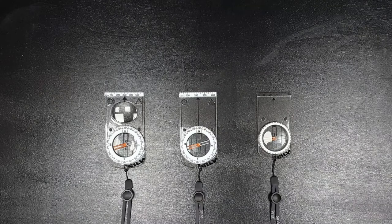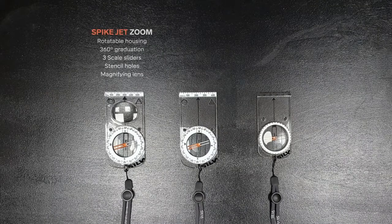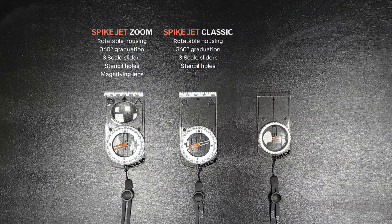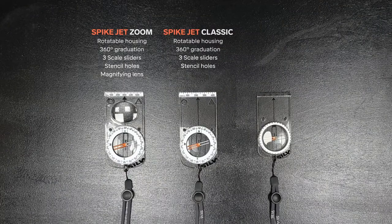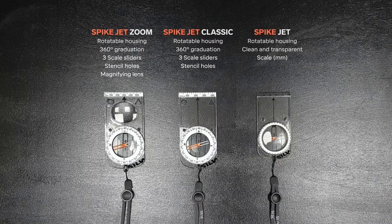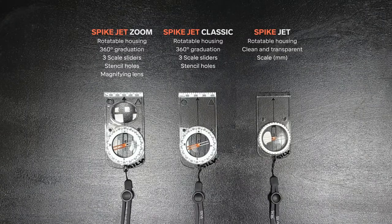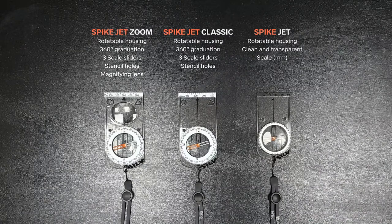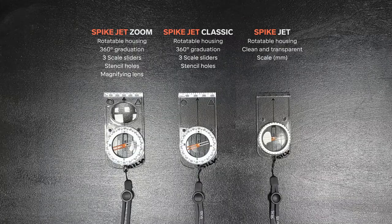There are three compasses in the Spikejet series. The Spikejet Zoom that comes with all the features. The Spikejet Classic comes without the magnifier. And the Spikejet that is a slightly smaller version with less graphics and a fixed millimeter scale on the front tip. Rotatable housing of course, but no graduation. Everything to keep it as clean and as lightweight as possible.